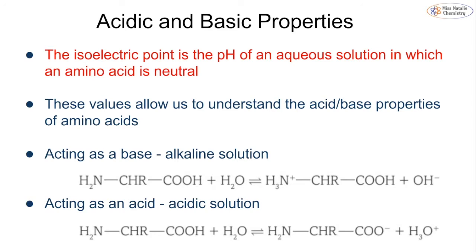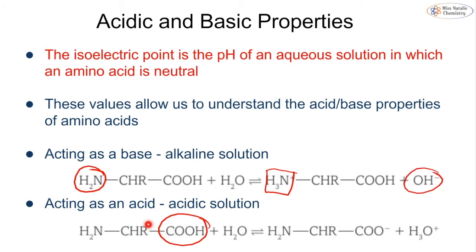Amino acids have the capability to act as both an acid and a base because they contain an NH2 group that can act as a base, and they have a carboxyl group which can act as an acid. When acting as a base, it accepts a proton to form NH3+ and we form a hydroxide. If it is acting as an acid, it donates a proton and we form a hydroxonium ion and get a negative charge.